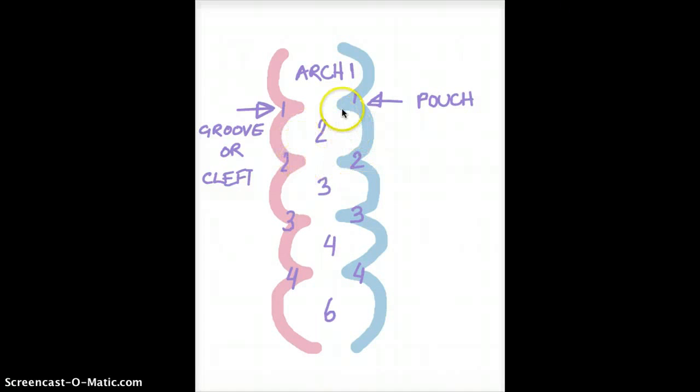Different structures arise from our arch, groove and pouch. Arch develops into something, groove develops into something, and pouch develops into something. They all have different structures developing from all these namings that we have mentioned.